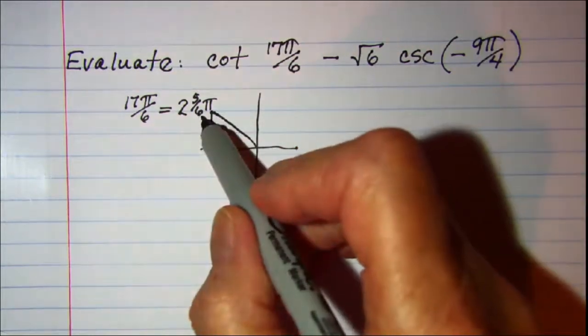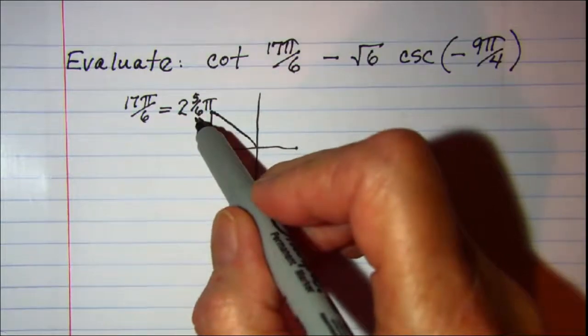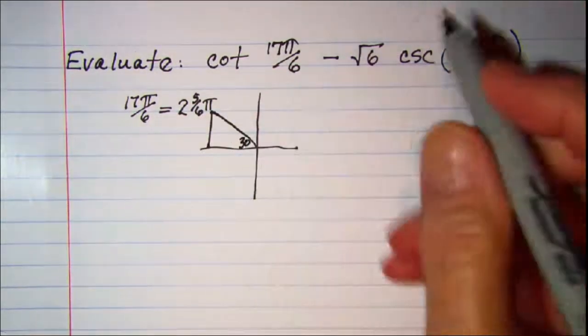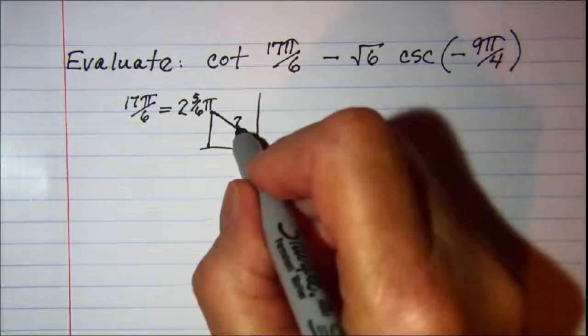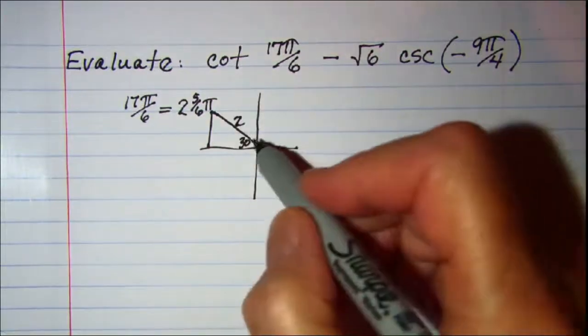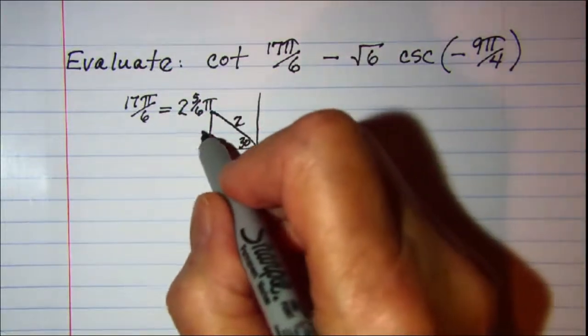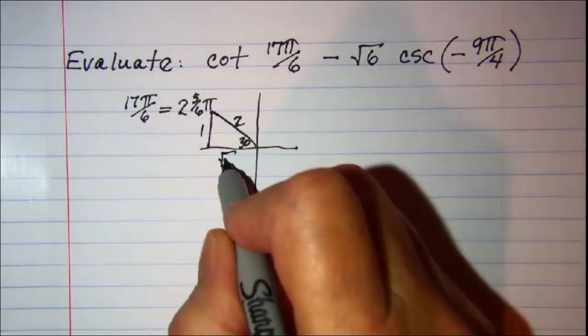When my denominator is 6, I have a reference angle of 30 degrees. So I can put my numbers in: the hypotenuse is 2, the side opposite the 30 is 1, and then the other side is root 3. This is to the left so it's negative.